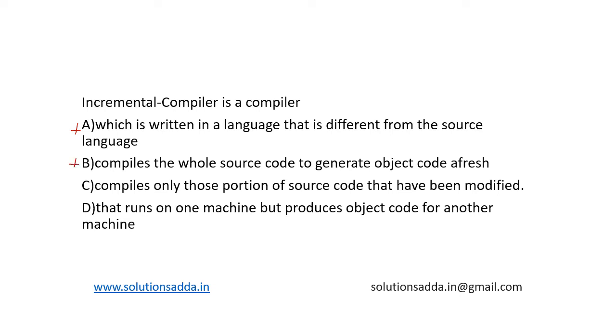Option C states it compiles only those portions of the source code that have been modified. Yes, this matches with the concept of an incremental compiler. So option C is the correct answer.